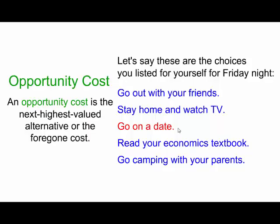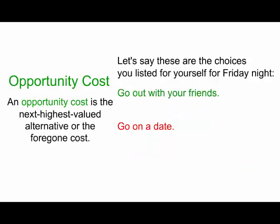What would you do if you weren't going out on this date? Let's say that if you went on the date, the next thing you would have done was probably go out with your friends. If you go out on the date, the date is your choice, but your opportunity cost is that you've given up going out with your friends. That is what's called your opportunity cost — the next highest valued alternative, or the foregone cost.